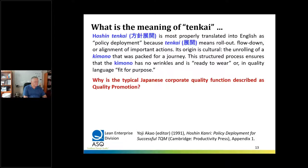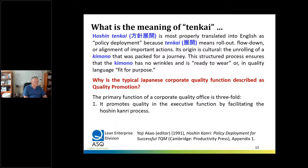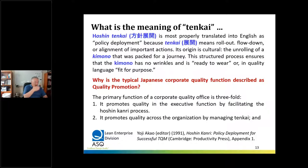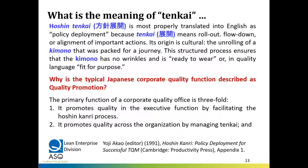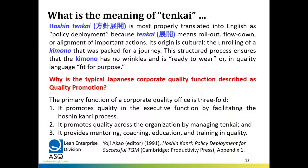What is a typical Japanese corporate quality function? Why is it called quality promotion office? The primary function of a corporate quality office in Japan is threefold. First, it promotes quality in the executive function by facilitating the Hoshin-Kanri process — they don't own the strategy, but serve as the independent facilitator ensuring all voices are heard, including the voice of the customer. Second, it promotes quality across the organization by managing the tenkai or rollout process. Third, it provides coaching, mentoring, education, and training in quality for all participants.